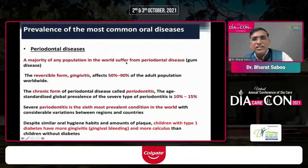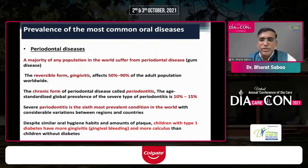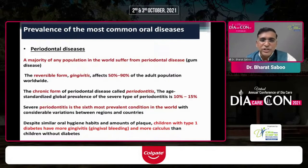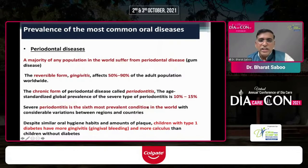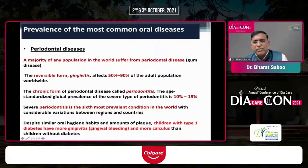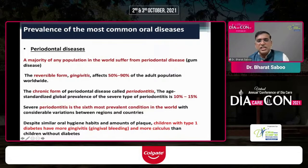The majority of any population in the world suffers from periodontal diseases — gum diseases — which have two main forms. The reversible form, gingivitis, affects 50 to 90% of the adult population at least once in their lifetime. The chronic form, periodontitis, affects 10 to 15% of subjects. It is now the sixth most prevalent condition in the world, which is considerable, though it varies between regions and countries.